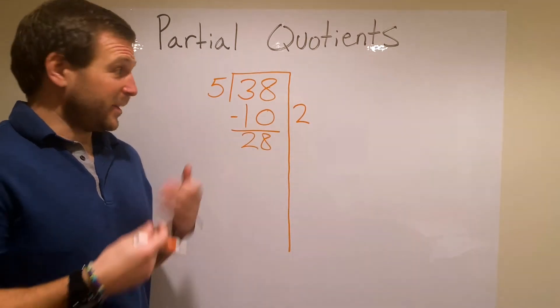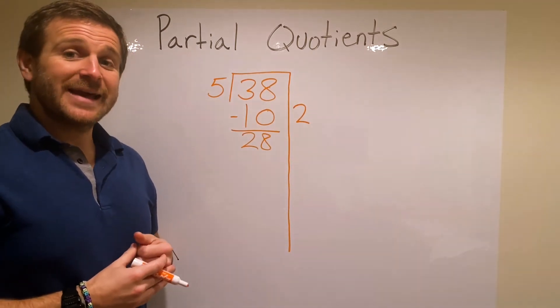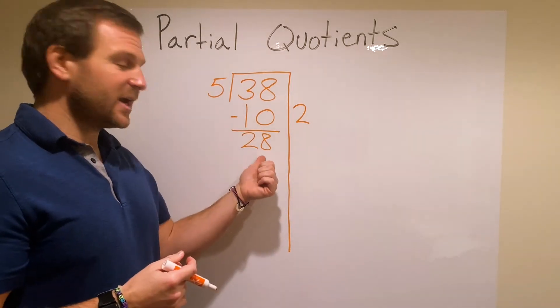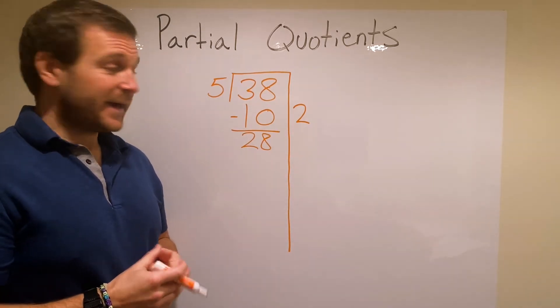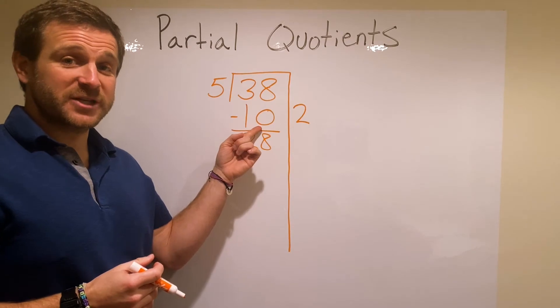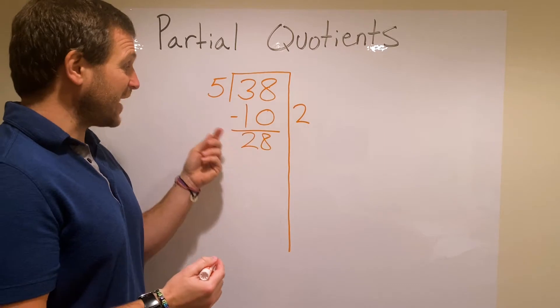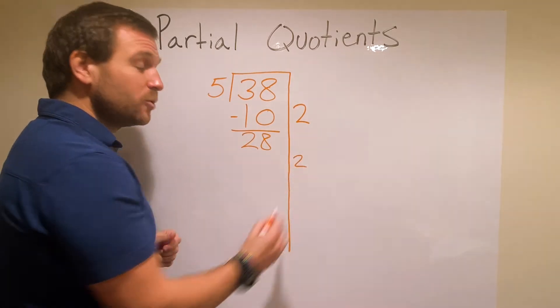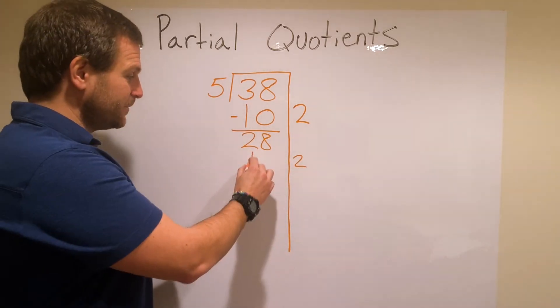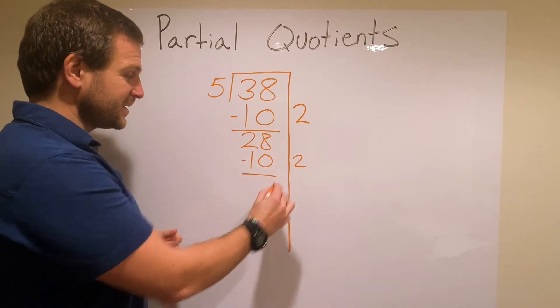Now at this point I basically start the problem over again. How many groups of 5 can I remove from 28? And if this worked for me the first time, I can do it again. I can remove 2 more groups of 5. So 2 more groups of 5 again is going to give me 10, and I simply subtract.